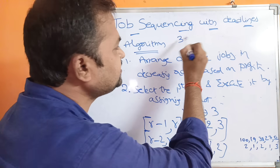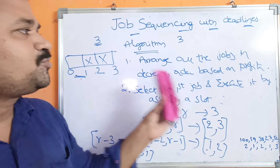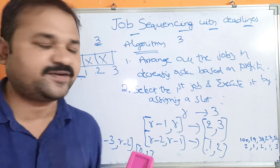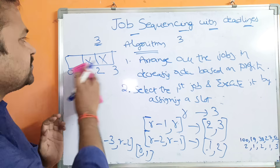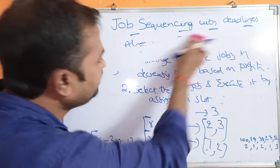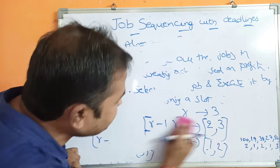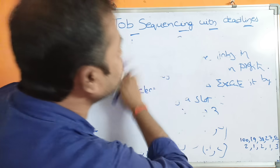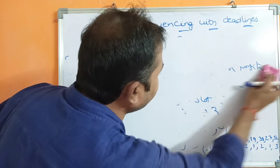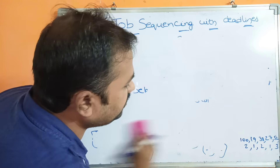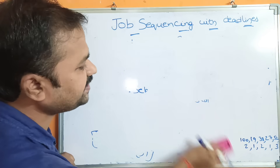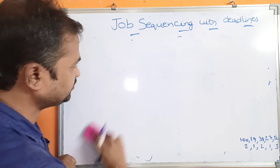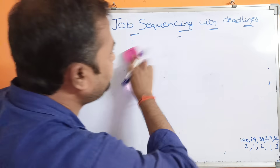The third step is to execute all the processes one by one in this manner. Following these three steps gives us the optimal solution — the best sequence — for job sequencing with deadlines.